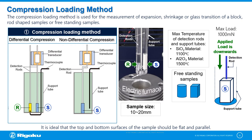Rigaku provides the differential type and non-differential type compression loading attachment. The maximum load that can be applied is 1000 mN. The maximum operating temperature depends on the detection rod and support pipe. For measurements up to 1100 degrees centigrade, we use the quartz type detection rod and support pipe. For measurements up to 1500 degrees centigrade, we use the alumina type detection rod and support pipe.